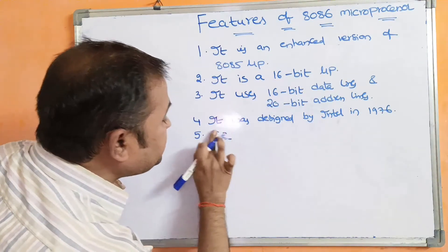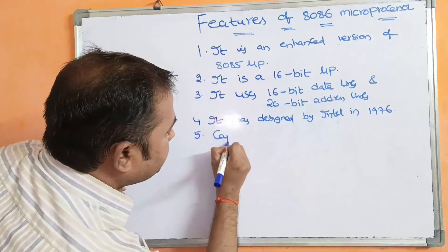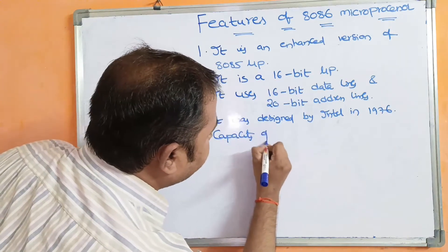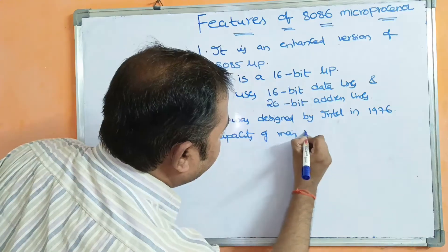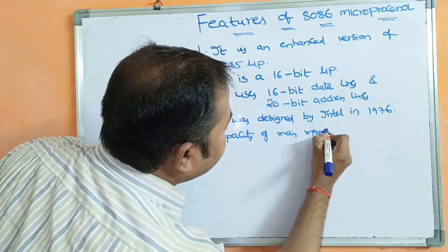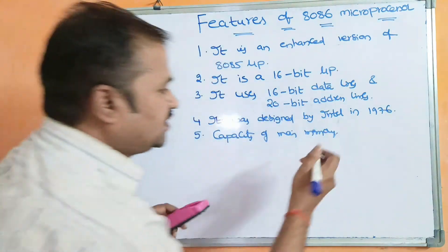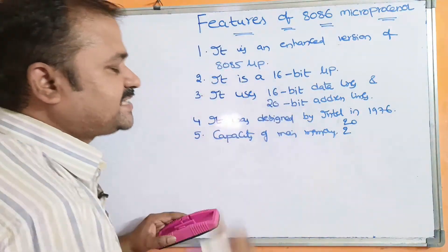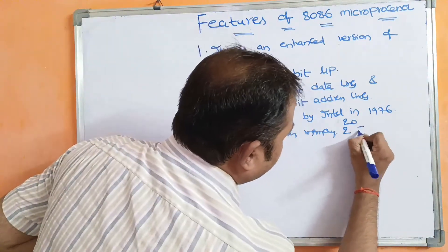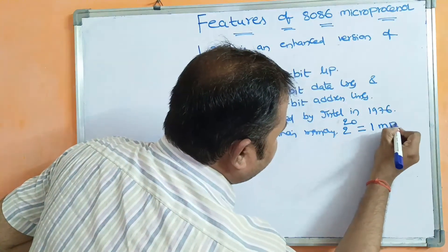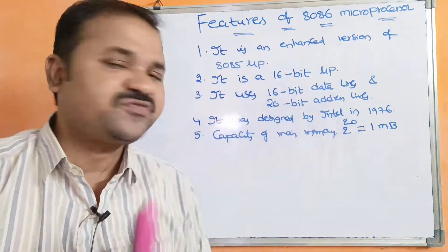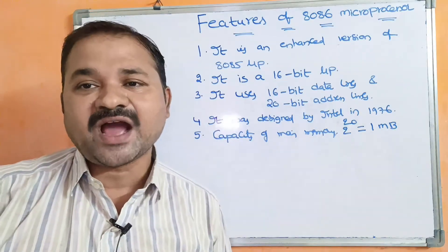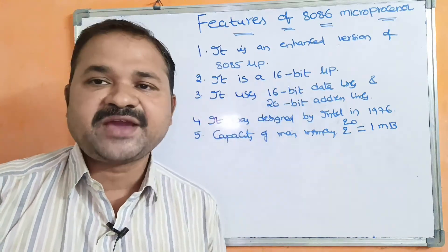The capacity of the main memory is 2 to the power of 20, because the size of the address bus is 20. So 2 to the power of 20 equals 1 megabyte. Therefore, the size of the main memory in the 8086 microprocessor is 1 megabyte.